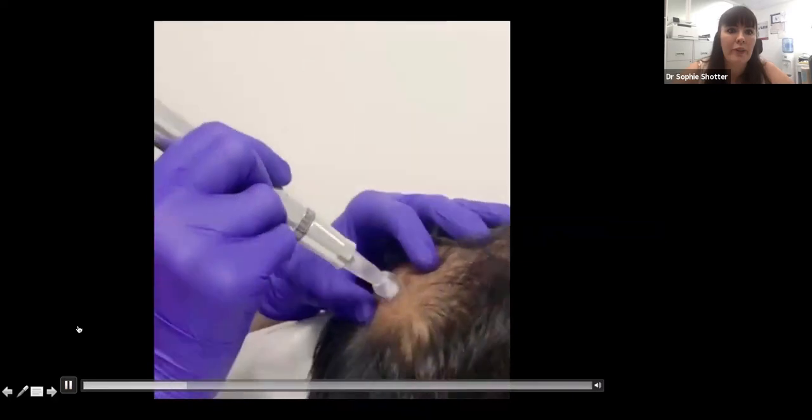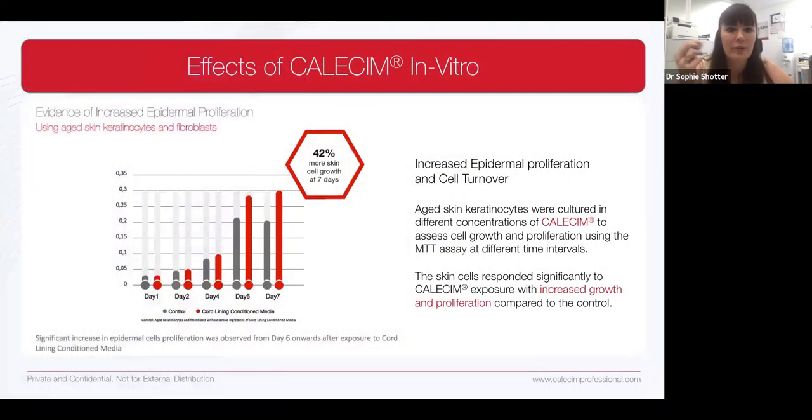We know that calecin causes increased epidermal proliferation and cell turnover. They get 42% more skin cell growth at seven days. And this has been tested using aged keratinocytes and fibroblasts. Now, the hair follicles are still sitting in skin. So the stimulation of the surrounding skin, the hair follicle itself and the extracellular matrix is very, very important.